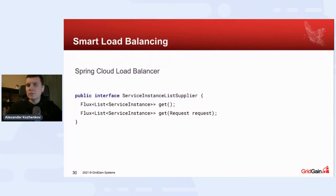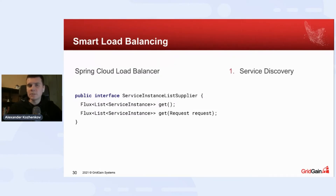The actual routing logic will be similar for client and server-side load balancers, so we'll use client-side as an example. We need to implement two methods: the first one gets the whole list of available services, so we need some sort of service discovery that says what nodes are registered and online. The second method returns the list of nodes for a particular request, and for that we need to know about partition mapping in the cluster — what data is stored on each node.